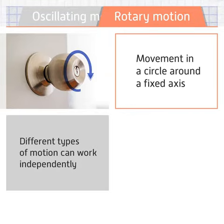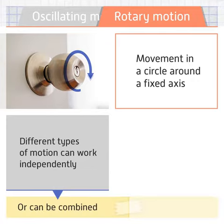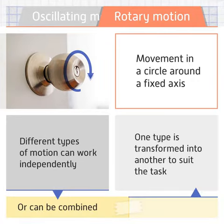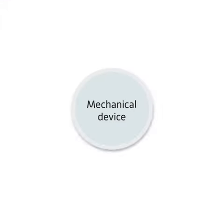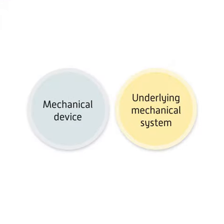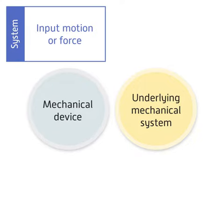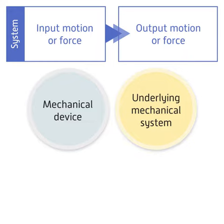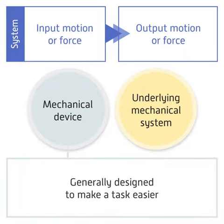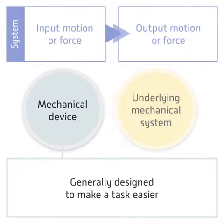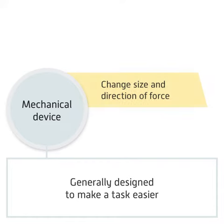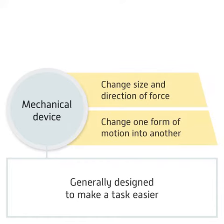Different types of motion can work independently or can be combined so that one type is transformed into another to suit the task that needs to be performed. In a mechanical device there's an underlying mechanical system in operation. These mechanical systems are made up of mechanisms which are able to transform an input motion or force into an output one. Generally a mechanical device is designed to make a task easier, because the mechanical system is able to change the size and direction of the applied force, and some devices can change one form of motion into another.